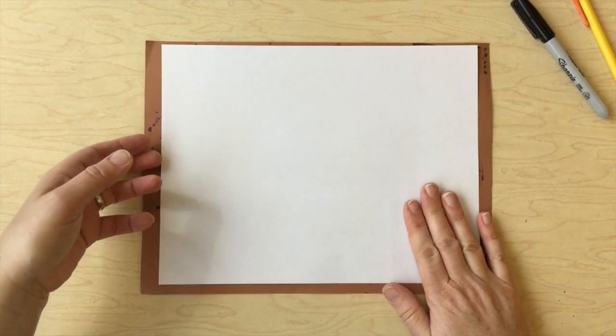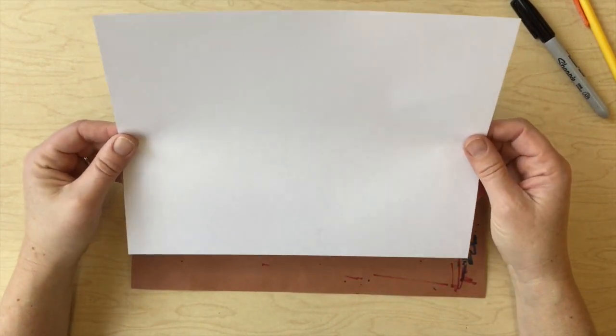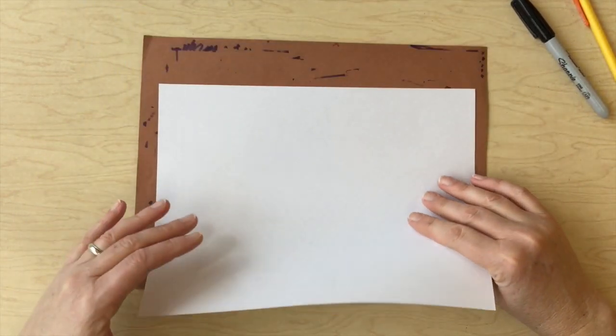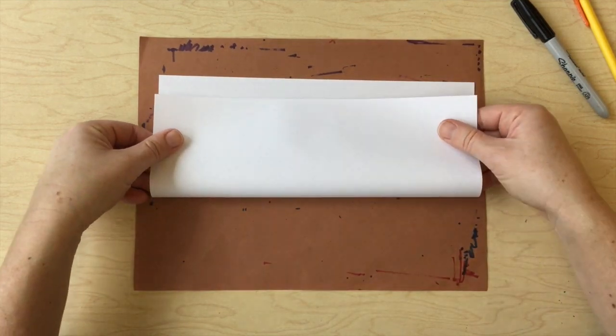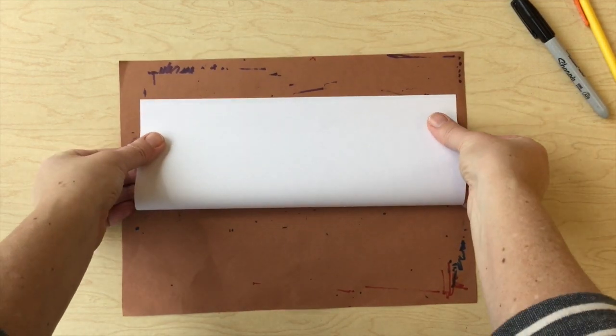You'll be able to use your imaginations and decide what you want to make today. So get your materials ready, set up your workspace, and we'll get started. All right, we've got our materials ready. The first step that we're going to do is take our thin copier paper and fold it in half.